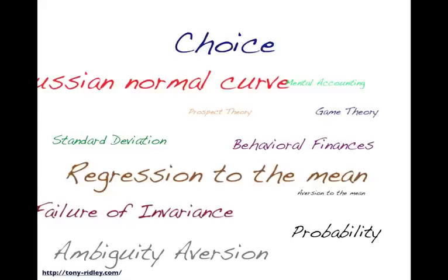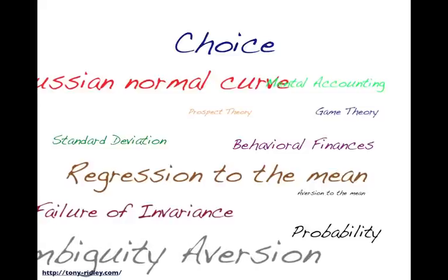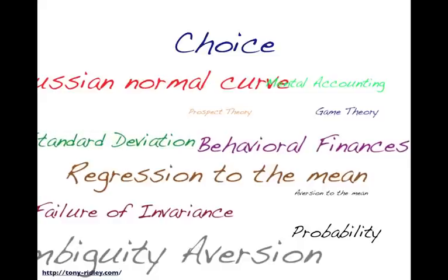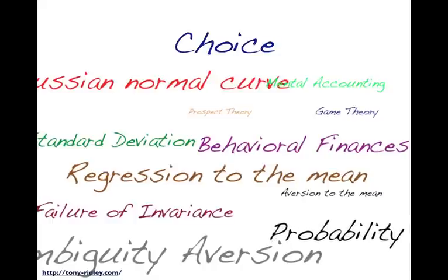We've also got game theory, mental accounting, and ambiguity aversion — which is a typical human factor to try and rationalise or put a name and face to things, often leading people to oversimplify or simply make things up. Behavioural finance, standard deviation — the list goes on. All of these key factors, I recommend you actually research and look into them. These are some of the most progressive and most relevant aspects associated to risk management, and this all derives from things like probability.